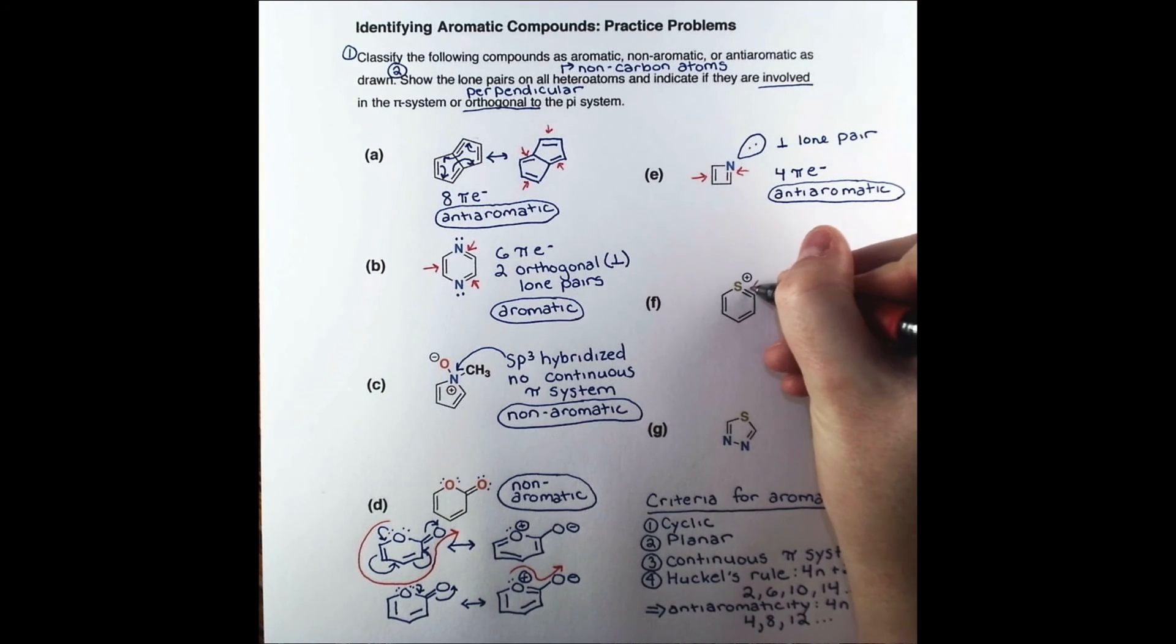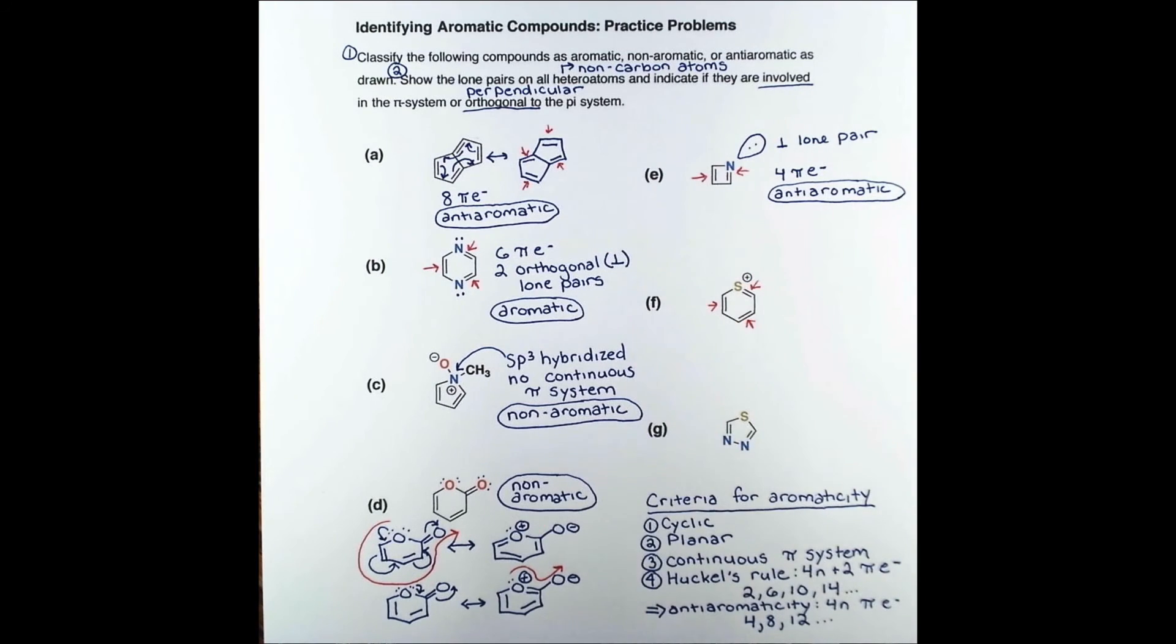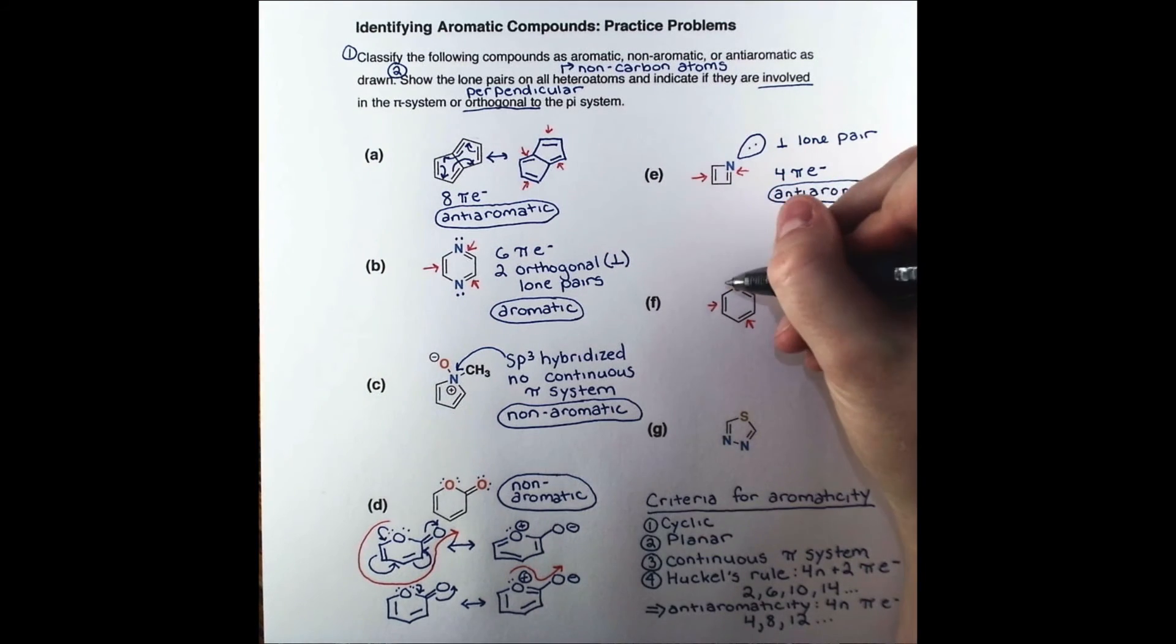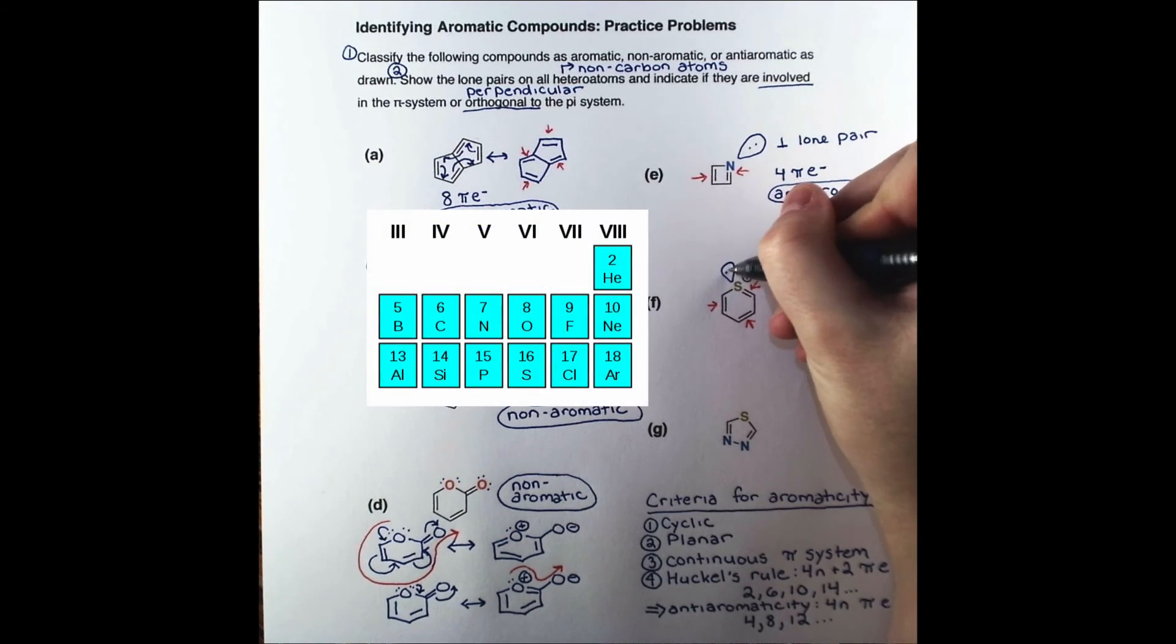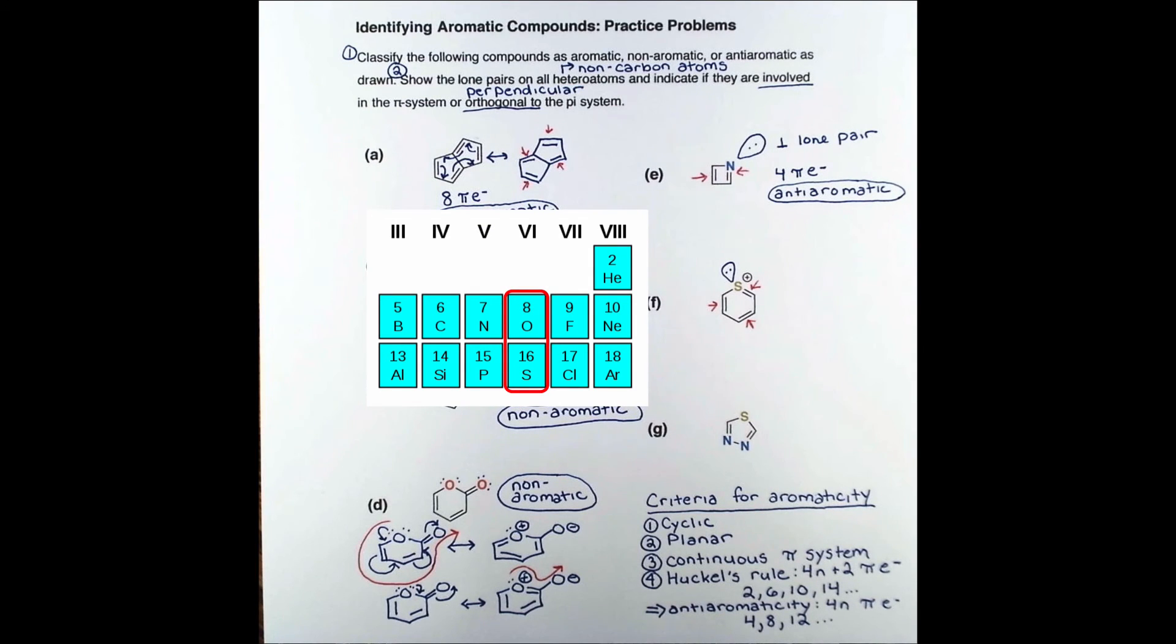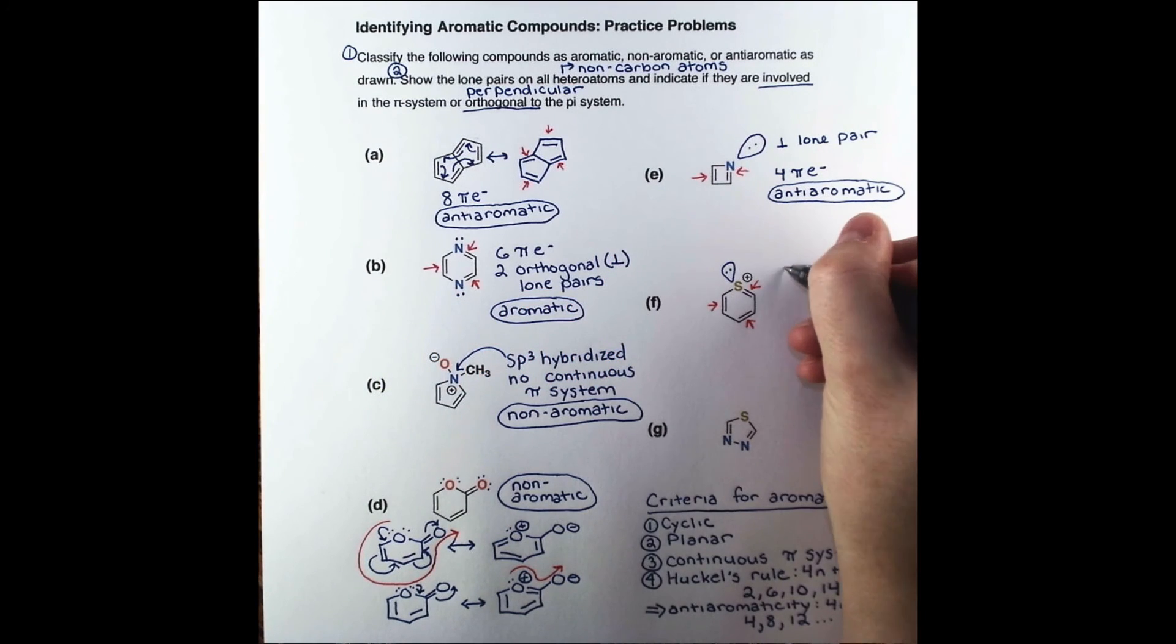This compound, with a positively charged sulfur atom, has three double bonds within the ring. So what about the lone pairs on sulfur? Sulfur is in the same group as oxygen on the periodic table, so only considering the valence-sp hybrid orbital, we can draw a lone pair on sulfur that does not participate in the pi system. So this compound has six pi electrons and is aromatic.